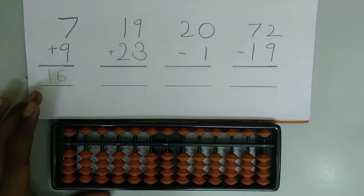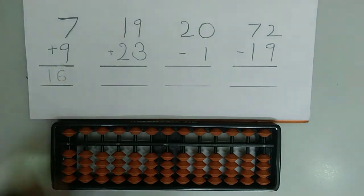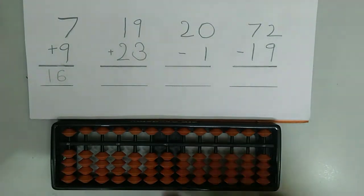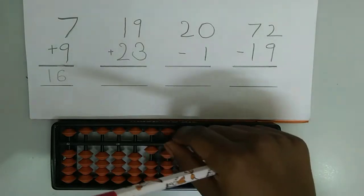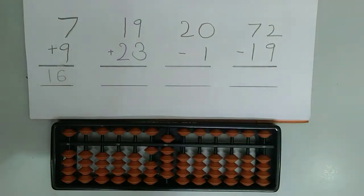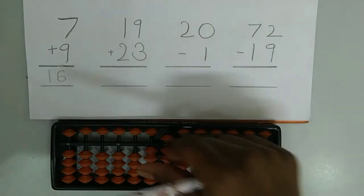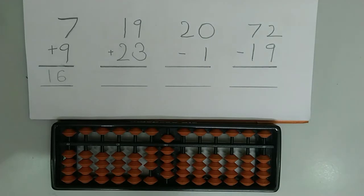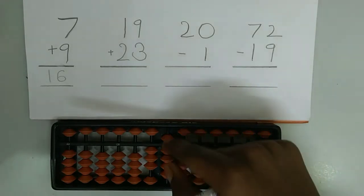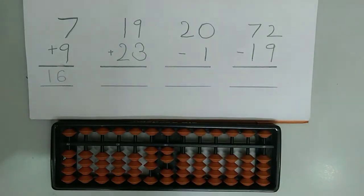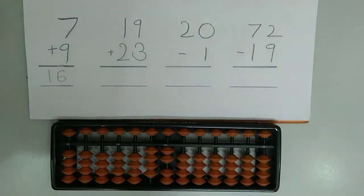The next example is 19 plus 23. It is a 2-digit example. First we have to represent 19 on the abacus. Now we have to add 23. For that, first we have to add 2 on the tens rod and now we have to add 3 on the ones rod. Here we use the big friend concept. The friend of 3 is 7, so we first subtract 7 because 7 is the friend and add 10 because 10 is the boss. The answer is 42.